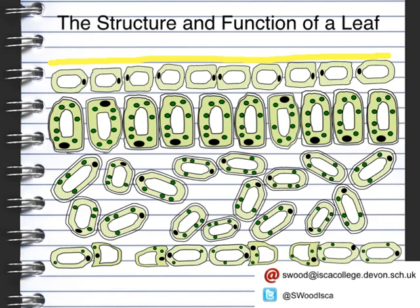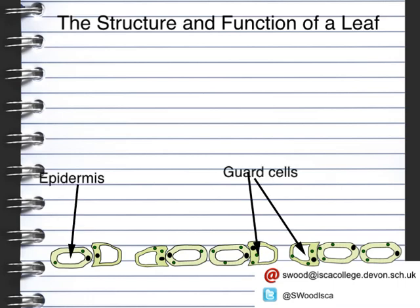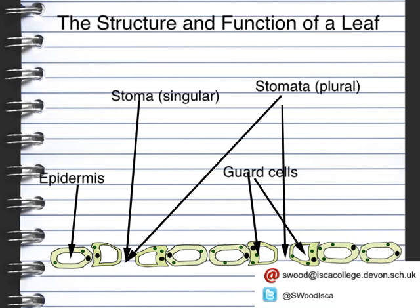At the bottom is the lower epidermis. You've got the epidermis cells and, next to the gaps, you have guard cells. The gaps themselves are known as stoma (singular) or stomata (plural), and stoma actually means opening — it is an opening caused by the guard cells. The guard cells are able to open and close to allow carbon dioxide in and oxygen out, and they also control the amount of water lost.